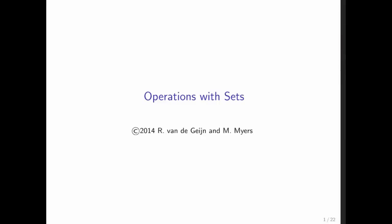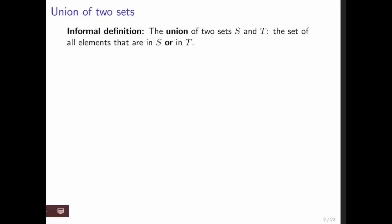So let's look at operations with sets. The first one is the union of two sets and the union of two sets is simply the set of all elements that are in S or T. You denote this by S union T and the formal definition is that it's all elements x that are in S or in T and this is the logical or.